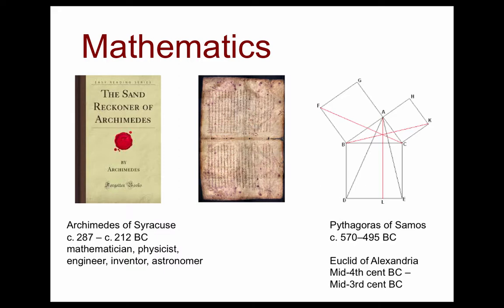Archimedes wrote a book we read to this day asking: how many grains of sand would it take to fill a sphere the size of the universe? The book does the math — first, how big is the universe? They knew how big the earth was, the distance from the earth to the sun, and that beyond the planets are the fixed stars. He calculated the distance to the fixed stars, the size of a grain of sand, and worked through the whole problem. It's mostly an exercise to deal with big numbers, like 10 to the 8th power.